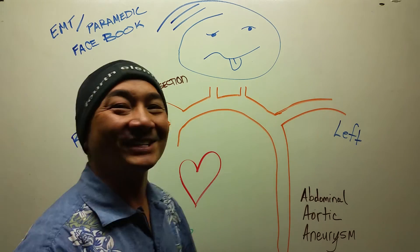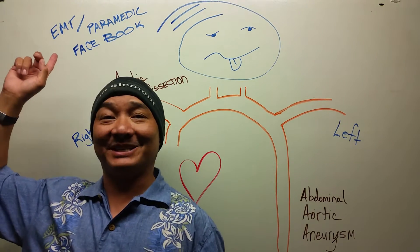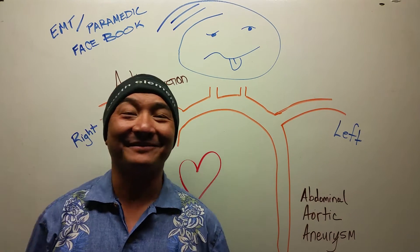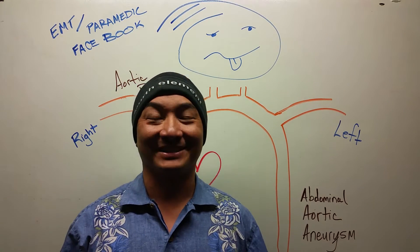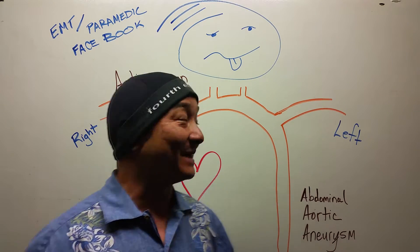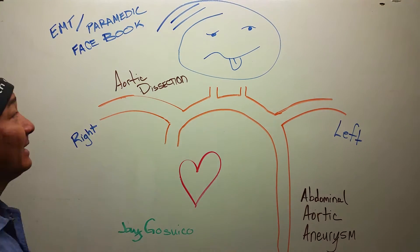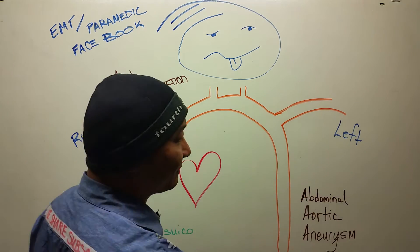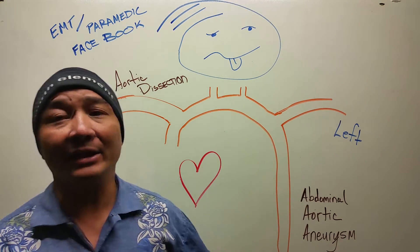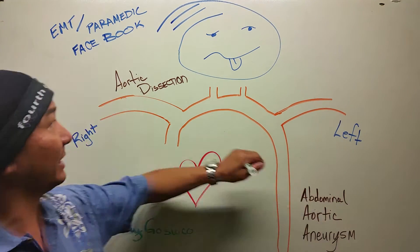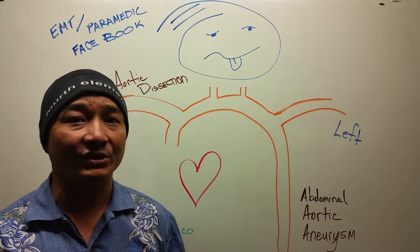Hi guys, this is Jago Suiko for EMT Paramedic on Facebook and for a couple of doctor and nurse friends of mine. So let's just jump in. This is your aortic dissection versus abdominal aortic aneurysm — your AAA versus your aortic dissection.